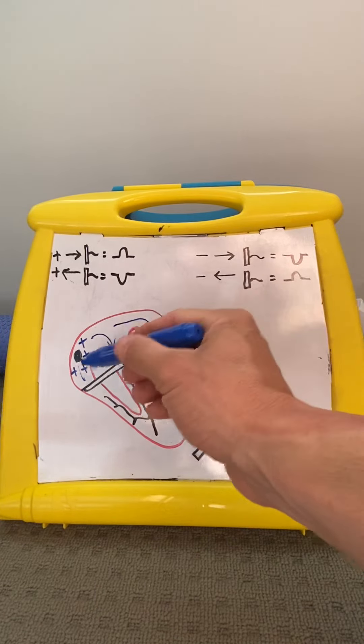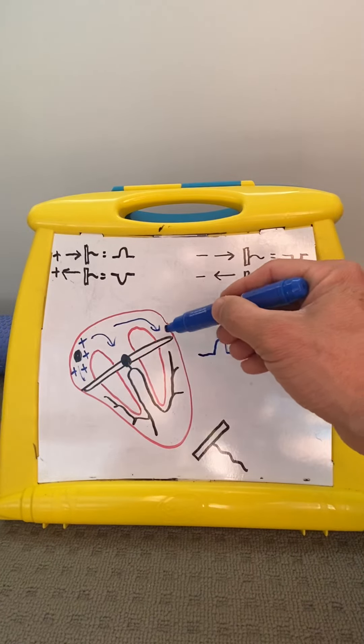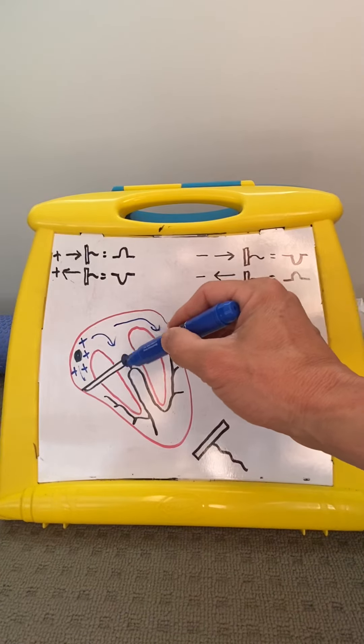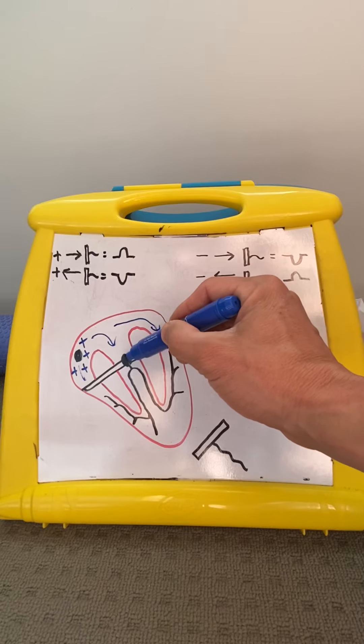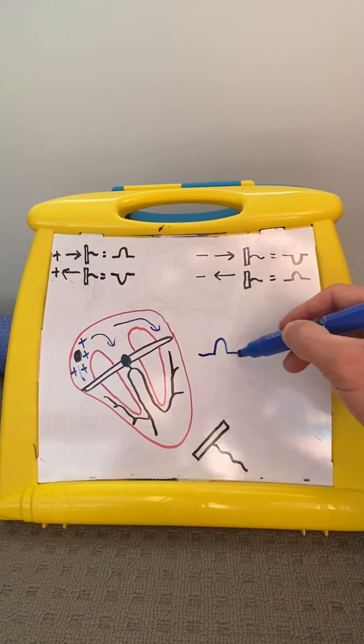Then this positive wave or depolarization stops at this fibrous tissue. So it's gone through the atria, and it pauses. Here's the AV node, and this positive wave has to move slowly through, so you get this isoelectric point.